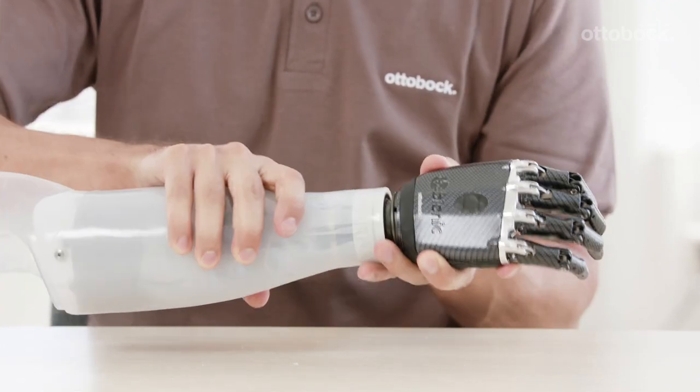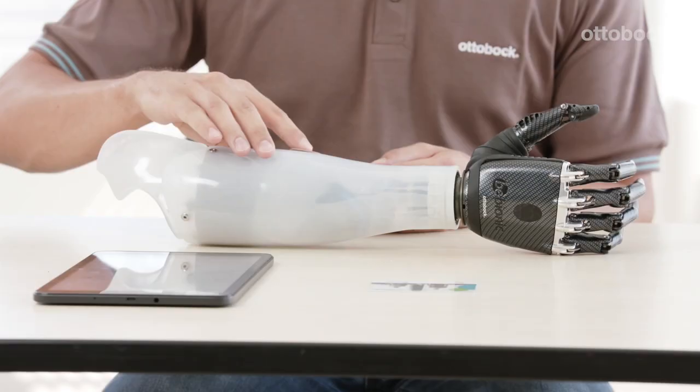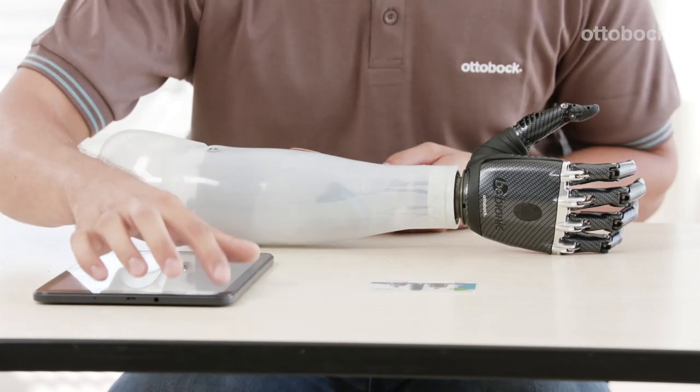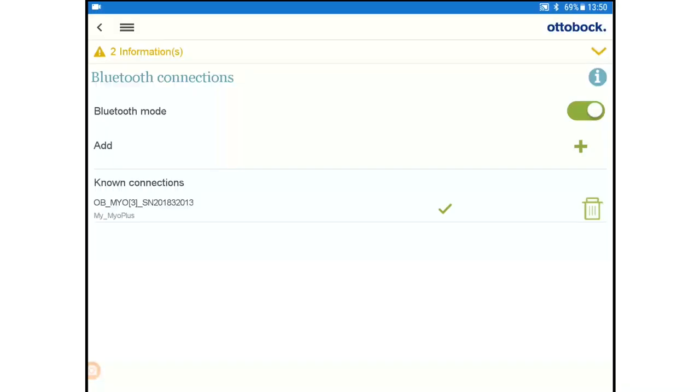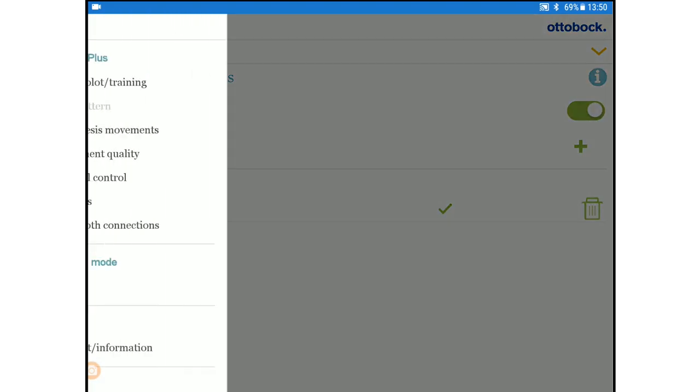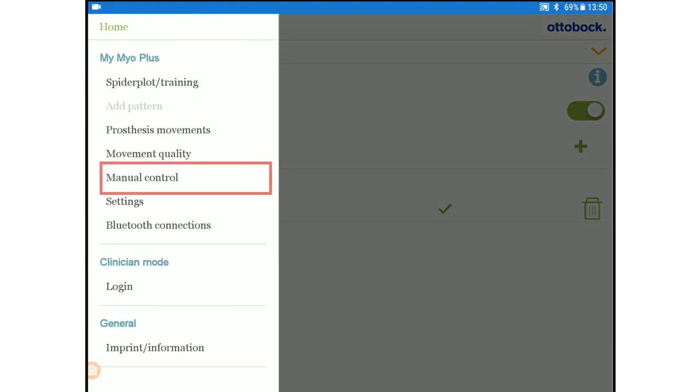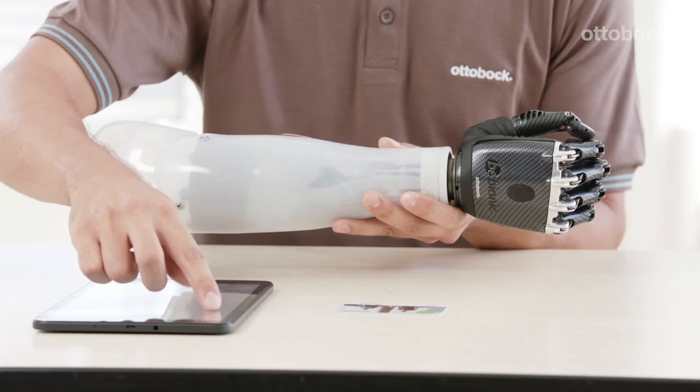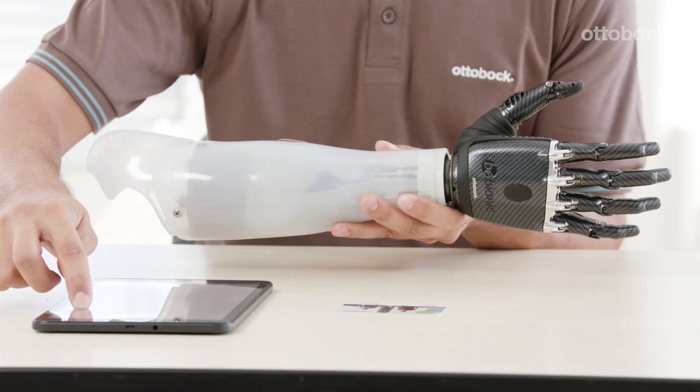Connect the hand to the interim's prosthesis and establish a connection to the Myo Plus app. Open the menu Manual Control to test the functionality of the prosthesis. Move the slider in the desired direction or tap the corresponding icon to manually control the prosthesis.